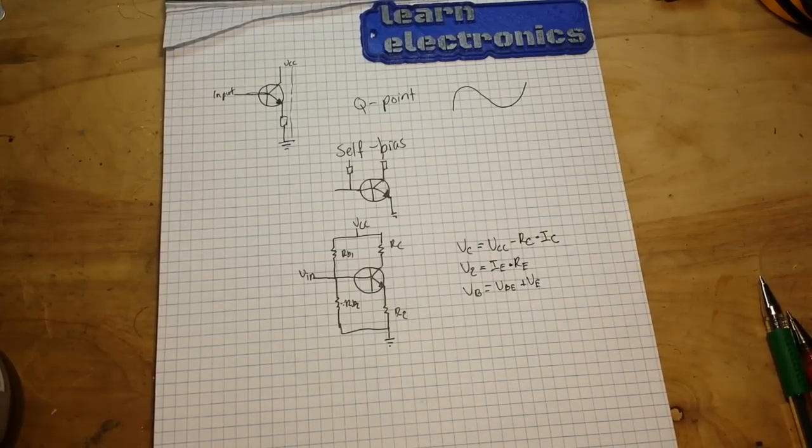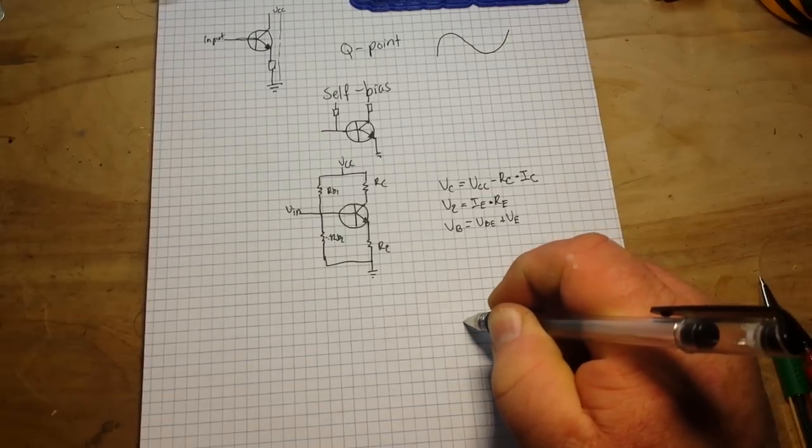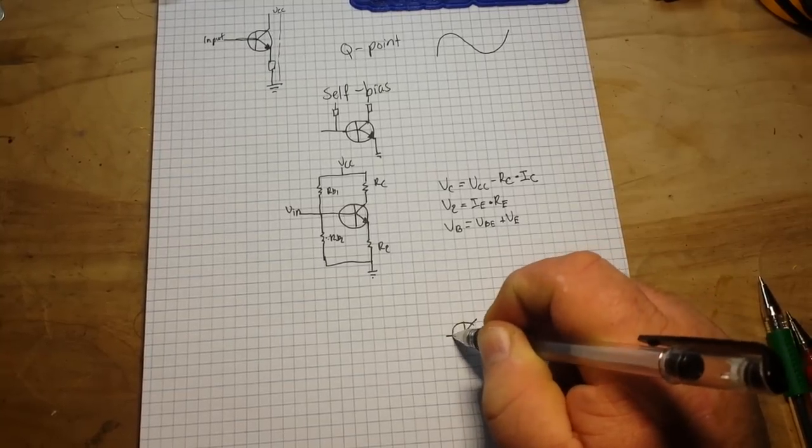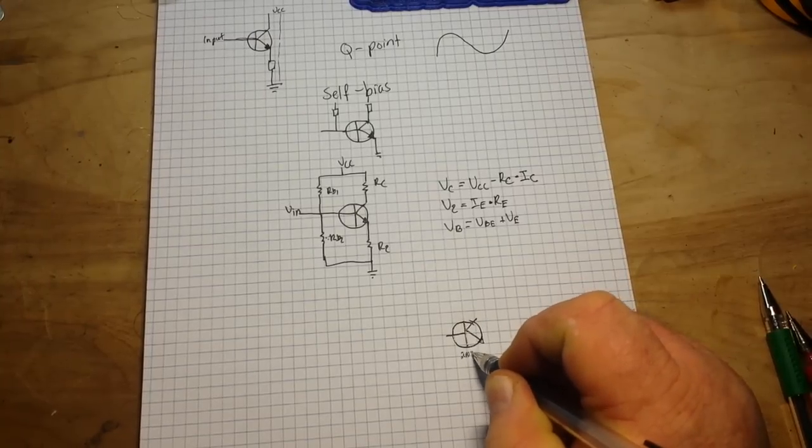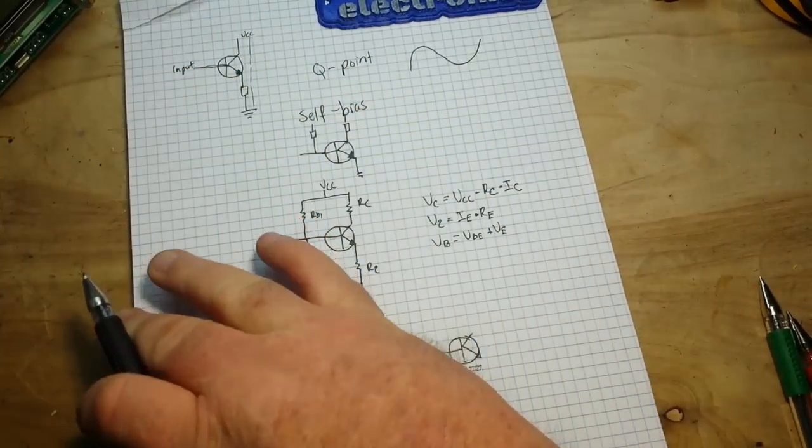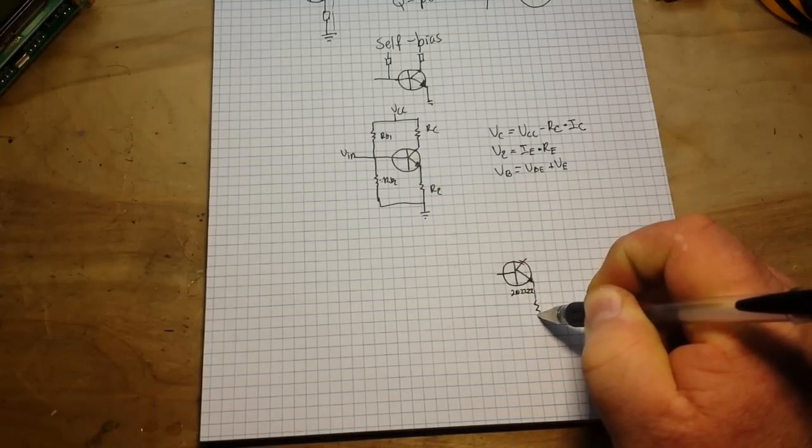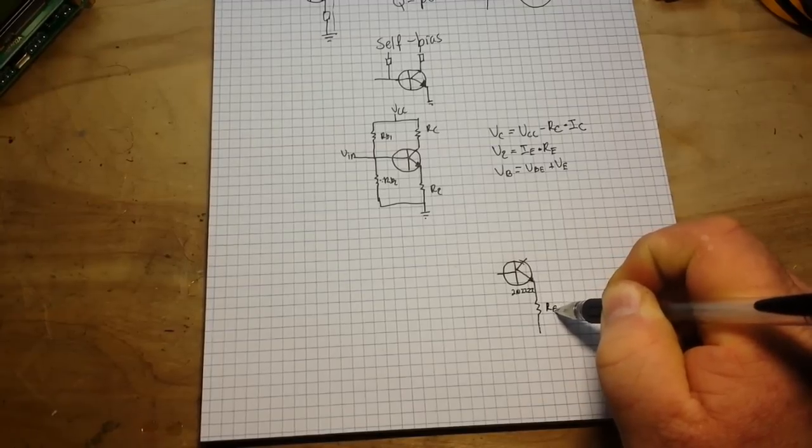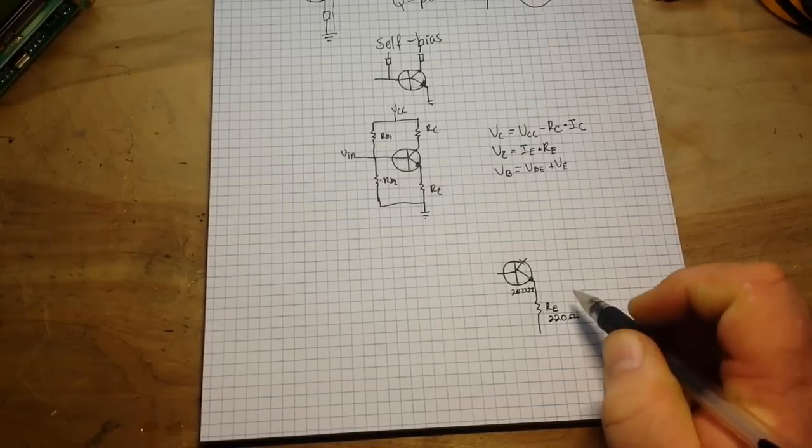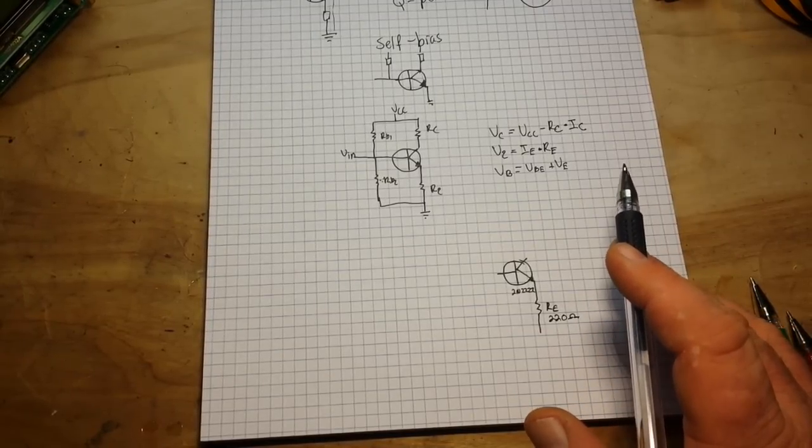And our base voltage is equal to VBE plus VE. We have those calculations, then we can figure out how we want to do it. So let's set up a practical common emitter amplifier. Again, we're going to start with our transistor. And in this case, we're going to use the 2N2222. You can use whatever you want. I'm just picking the 2N2222 because it's easy and they are widely available. So we're going to start with RE. And in this case, RE is going to be 220 ohms. Now, RE is one of the most important points of our circuit because it prevents what's called thermal runaway in the amplifier.